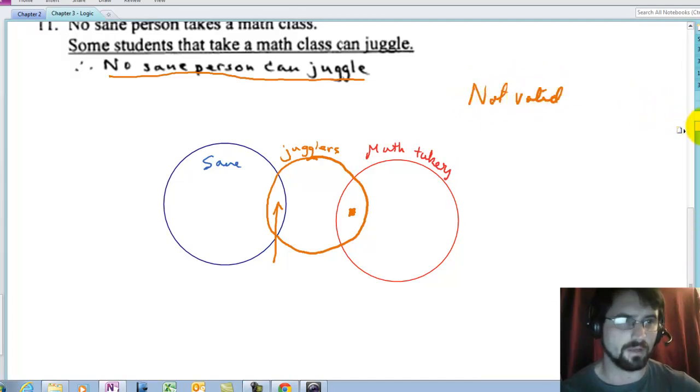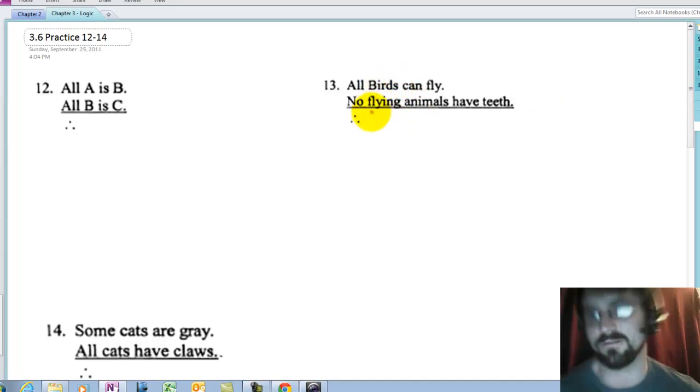Let's look at number 12. I think the next three, if I remember correctly, are fill in the blank. So here we go. All A is B. All B is C. Therefore, all A is C. I'll leave it to you guys to draw the picture on that. But you should get three circles that are embedded inside each other. I'll go to the more difficult one maybe.